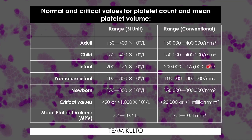The critical value for platelet count is less than 20 × 10⁹/L or more than 1,000 × 10⁹/L in SI units, which in conventional units is less than 20,000 or more than 1 million per cubic millimeter. For mean platelet volume (MPV), the normal range is 7.4 to 10.4 femtoliters in SI units, and 7.4 to 10.4 cubic millimeters in conventional units.